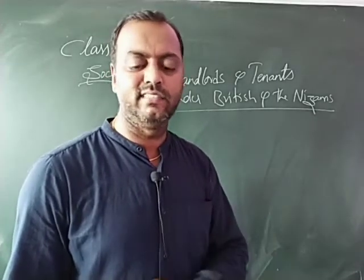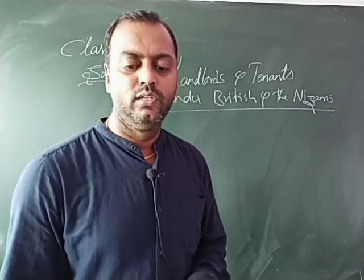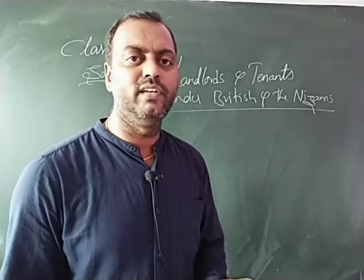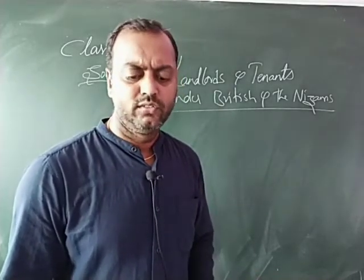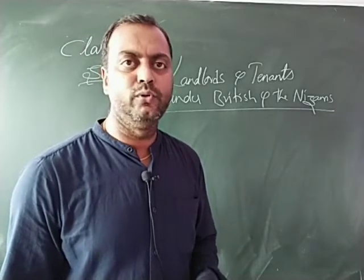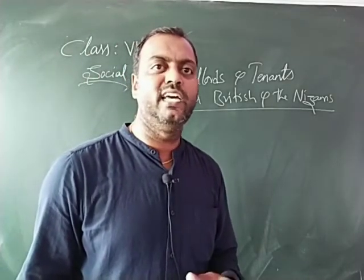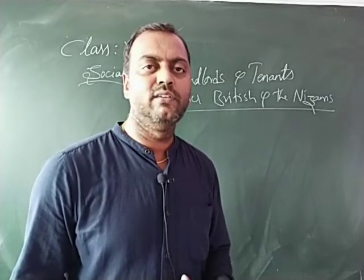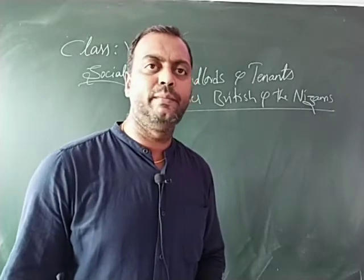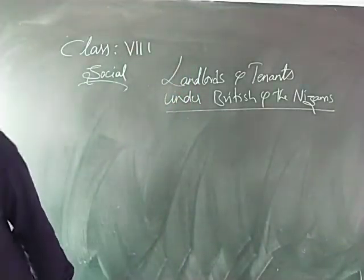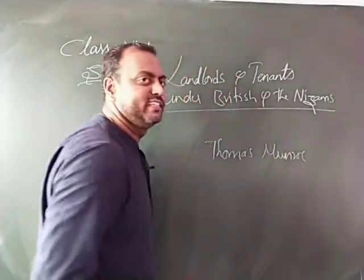By the early 19th century, many company officials were not convinced with the system in practice. They wanted to increase revenue, but could not since it had been fixed permanently, even as their expenses increased year by year. During this same period, the districts of Bellary, Anantapur, Kadapa, and Kurnool — which were under Nizam's control — were handed over to the Britishers because the Nizam was unable to maintain the British contingent. These four districts, known as Rayalaseema, were handed over as a form of debt settlement, and the British government appointed Thomas Munro as district collector.